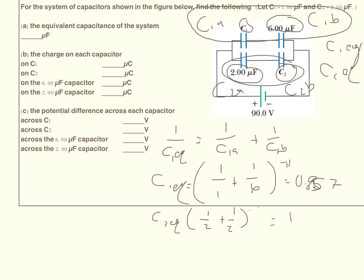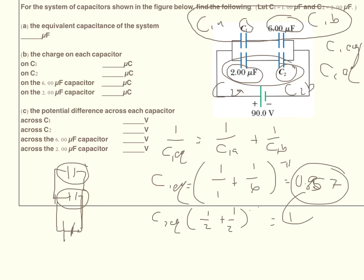So now I have two capacitors that are essentially in parallel. What I've broken that down into is two equivalent capacitors, C1EQ and C2EQ, in parallel with each other. To find the total equivalent capacitance I just add them together: 1 plus 0.857 gives 1.857 microfarads.